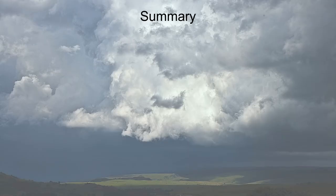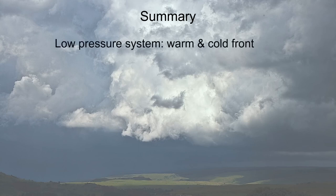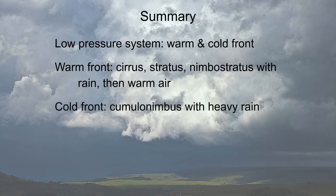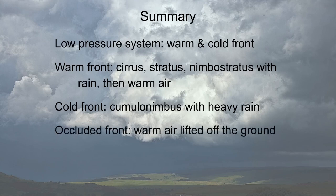To summarize: we've looked at low pressure systems which have a warm and a cold front. At a warm front, you'll first see cirrus clouds, then stratus, then nimbostratus with lots of rain, and then warm air. Then the cold front follows with cumulonimbus clouds with heavy rain, hail and thunder. An occluded front can occur when the cold front has caught up with the warm front — the warm air is lifted off the ground and the nimbostratus and cumulonimbus clouds follow each other very shortly.